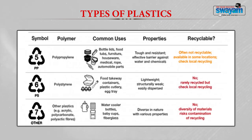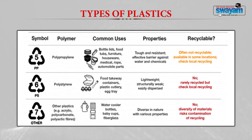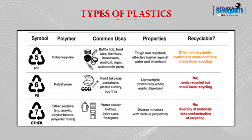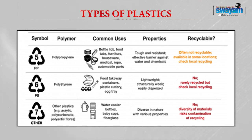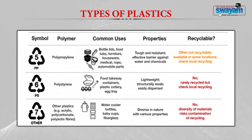The fifth type is polypropylene, denoted PP, used for manufacturing bottle lids, food tubes, furniture, ropes, and automobile parts. They are tough, resistant, and act as an effective barrier against water and chemicals. They are generally not recycled, though some local recycling is possible. The sixth type is polystyrene, denoted PS, used for manufacturing food takeaway containers, plastic cutleries, and egg trays. They are lightweight but structurally weak and easily dispersed, and cannot be recycled.